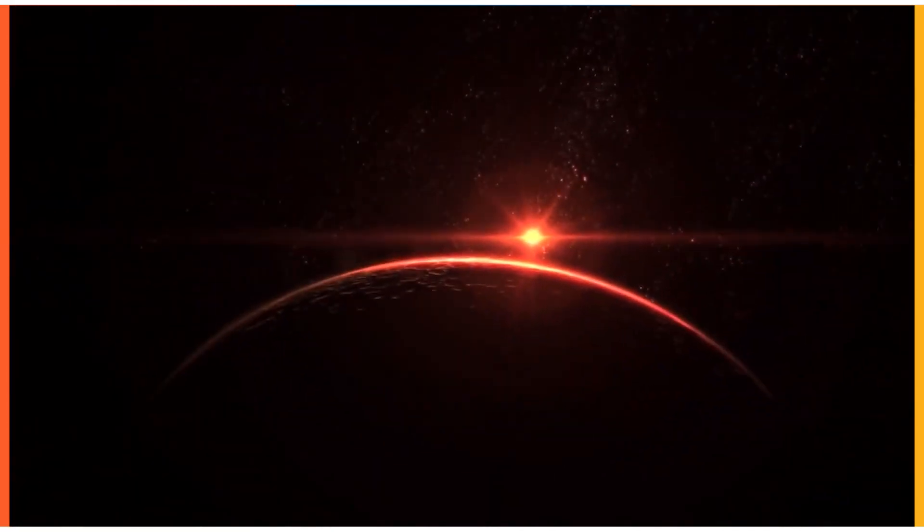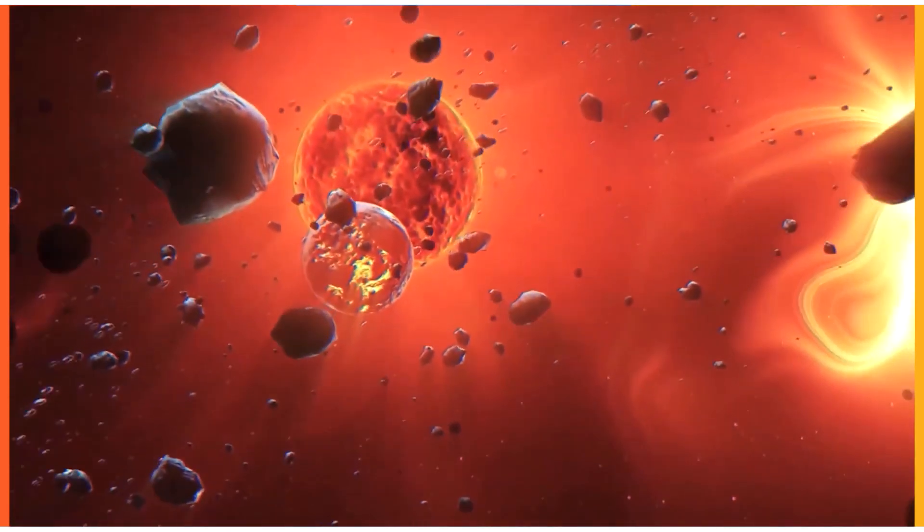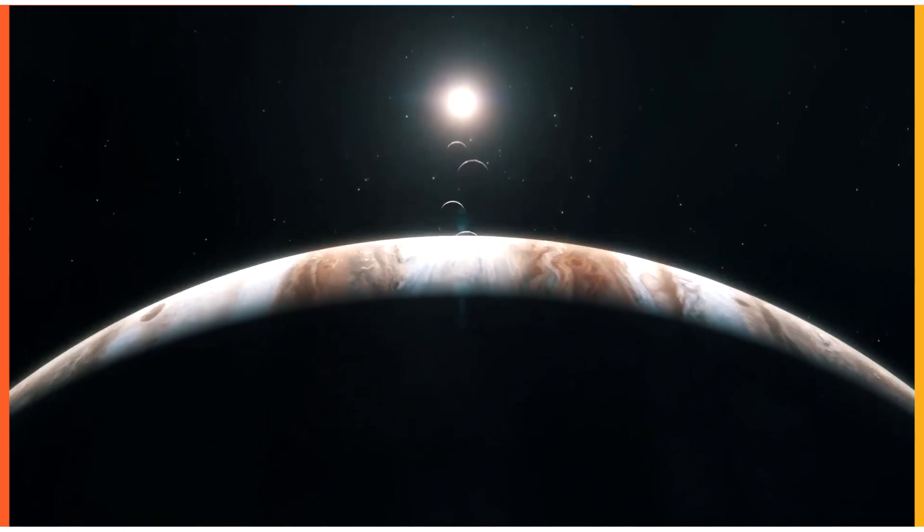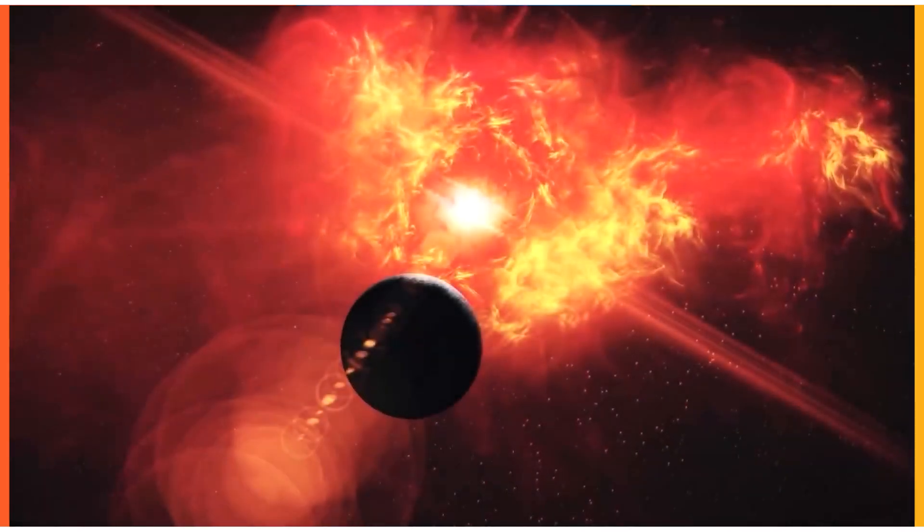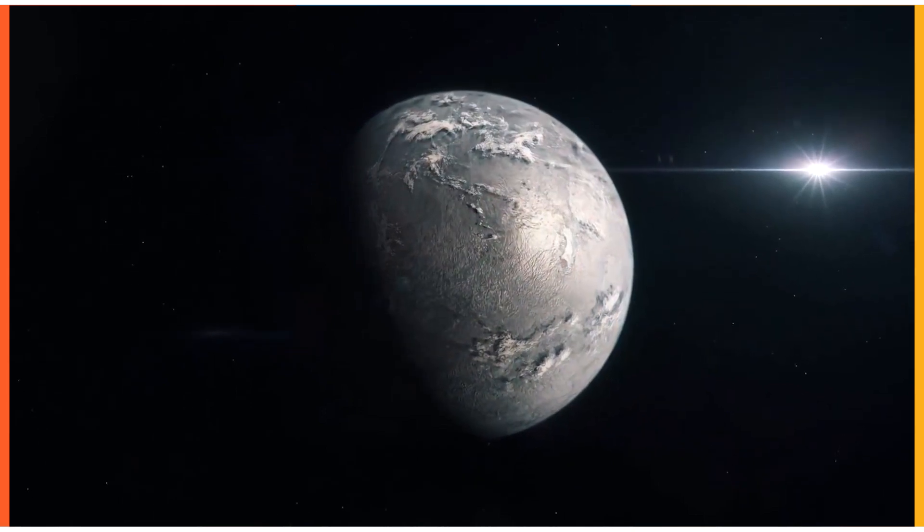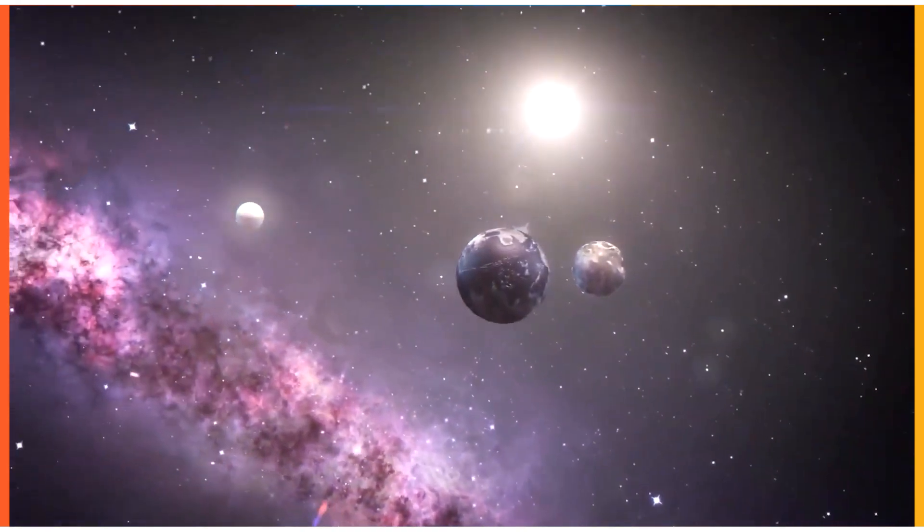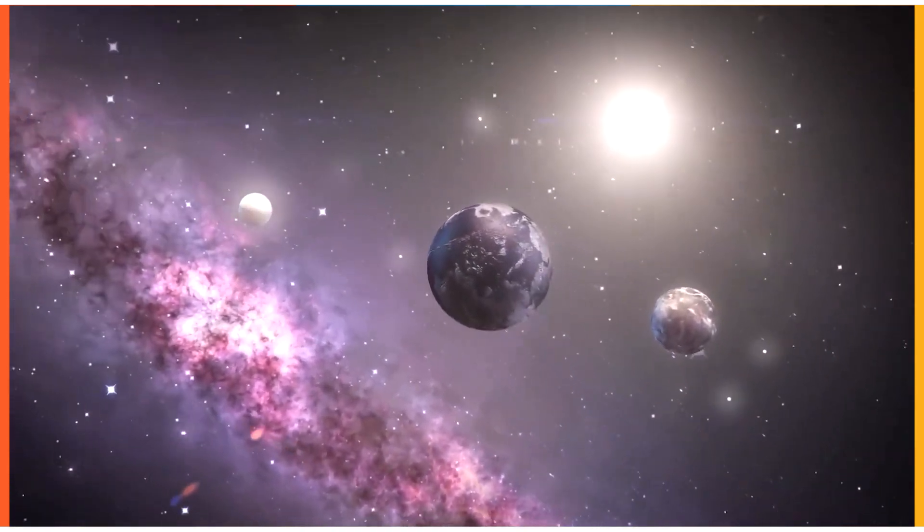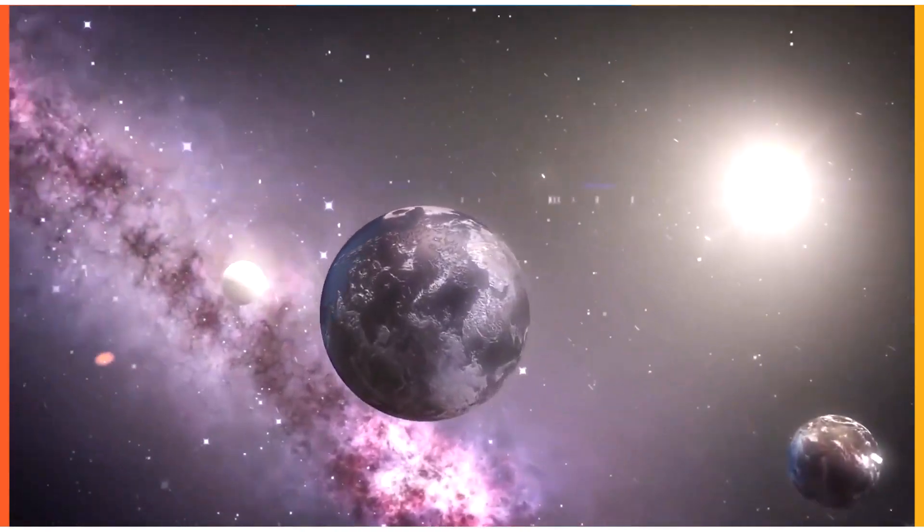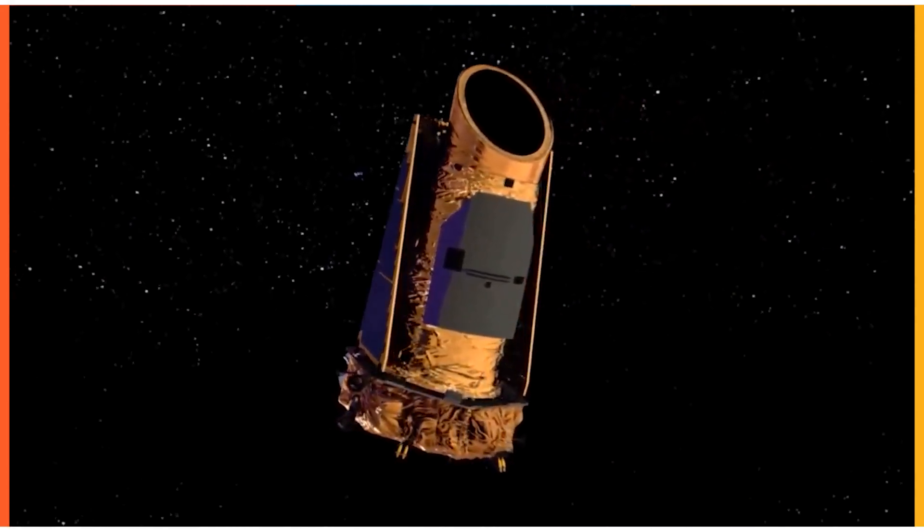Thousands of extrasolar planets or exoplanets have been identified by astronomers using Kepler alone since its inception. The majority of them are planets between Earth's size and Neptune's size, which is four times Earth's size. Many of these planets were identified in an area of the constellation Cygnus, roughly the size of a palm held at arm's length, where Kepler spent the first four years of its mission.